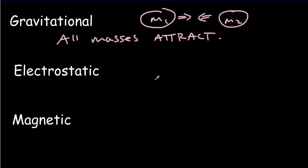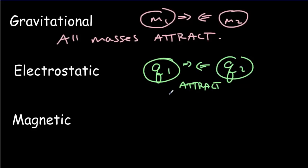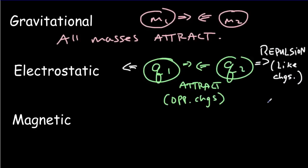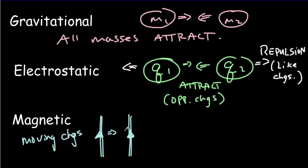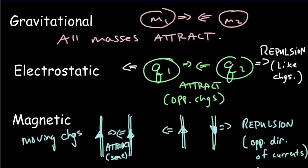Second is the electrostatic force, and it's very similar. If I have two charges, q1 and q2, they will attract, but only if the charges are opposite. If the charges are like, you'll get repulsion. So it's a little more complex than the gravitational field because you can get attraction or repulsion. And this third force — the magnetic force — is really a force between moving charges. If we've got two current-carrying wires beside each other, we have two sets of moving charges. They're going to attract if the currents are in the same direction, but if the currents are in the opposite direction, we'll get repulsion. There's going to be a strong relationship between a field created by charges versus a field created by moving charges, which is why you've probably heard of electromagnetic fields.